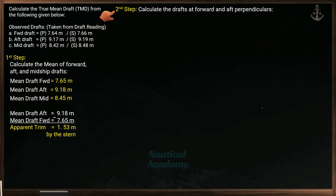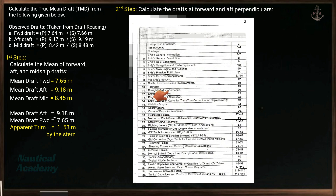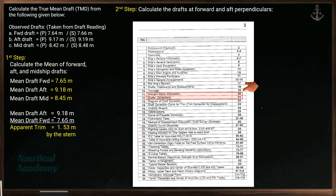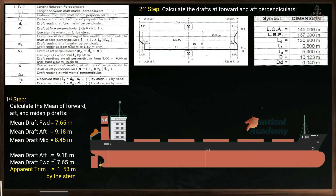Let's proceed to the next step: determine the drafts at the forward and aft perpendiculars. This time, we need the ship stability booklet. In the table of contents, find the draft marks information and draft correction — it can be found on pages 20 and 21. These pages contain the vital information needed to determine our drafts at perpendiculars, including definitions and formulae. To explain this in detail, let's use our model ship.